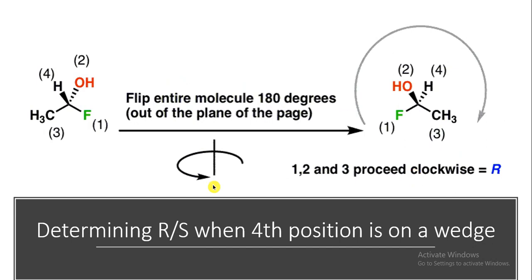When determining RS and the fourth-priority group is on a wedge, we know it should be behind. So we flip or rotate the entire molecule 180 degrees so that the fourth position moves to a dashed position. Then we check whether the 1-to-3 rotation is clockwise or anti-clockwise and assign R or S accordingly.